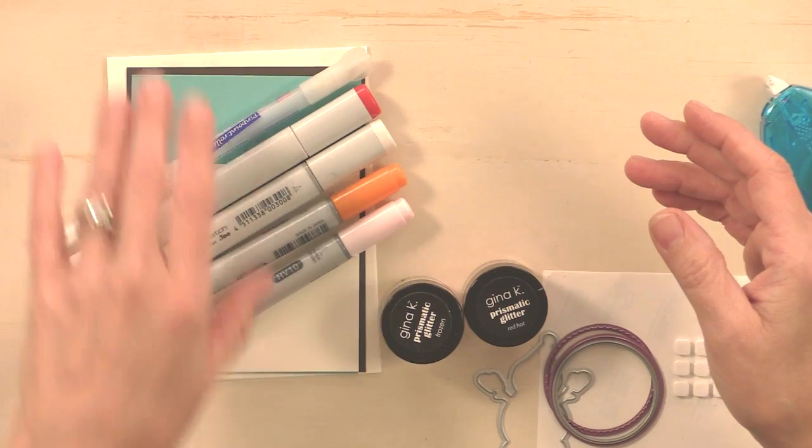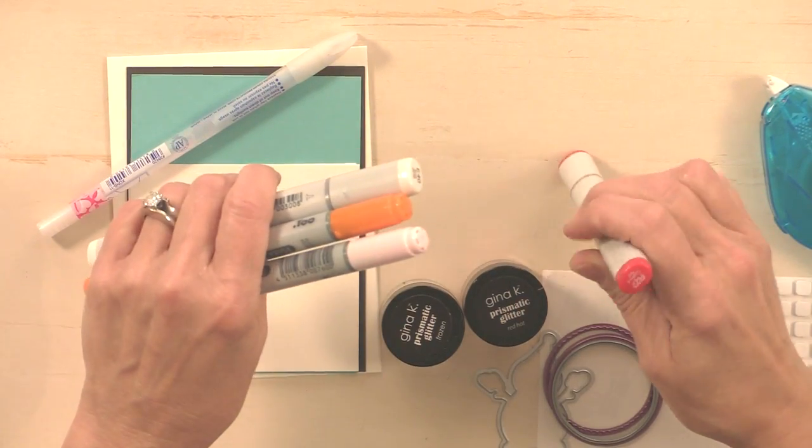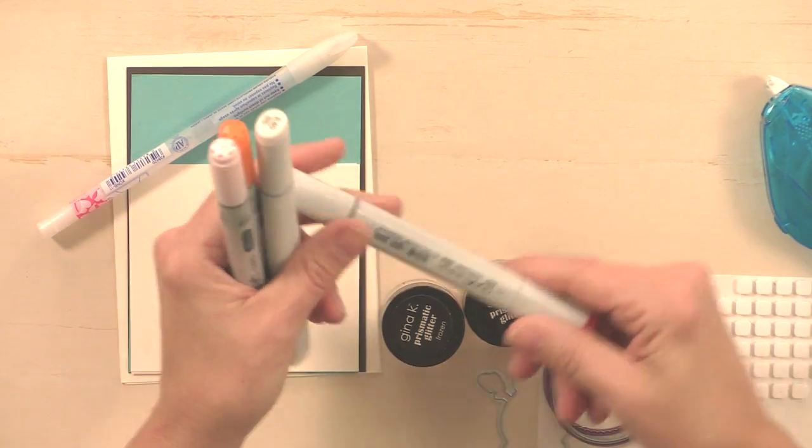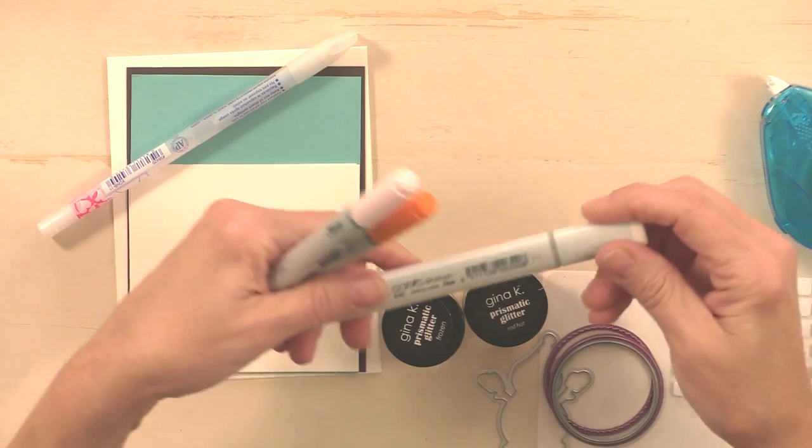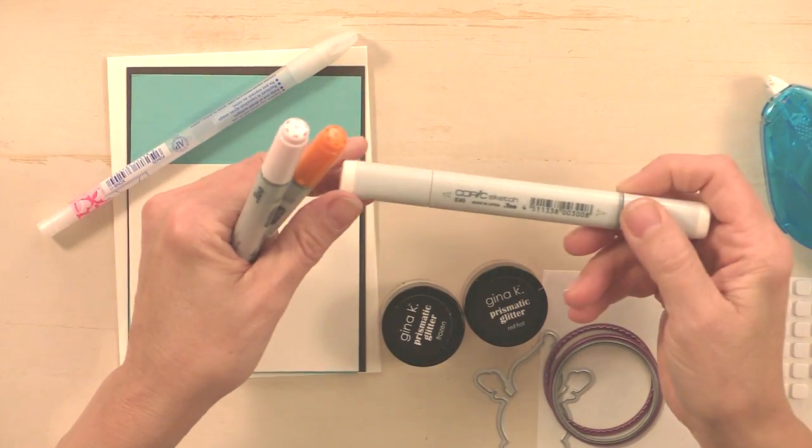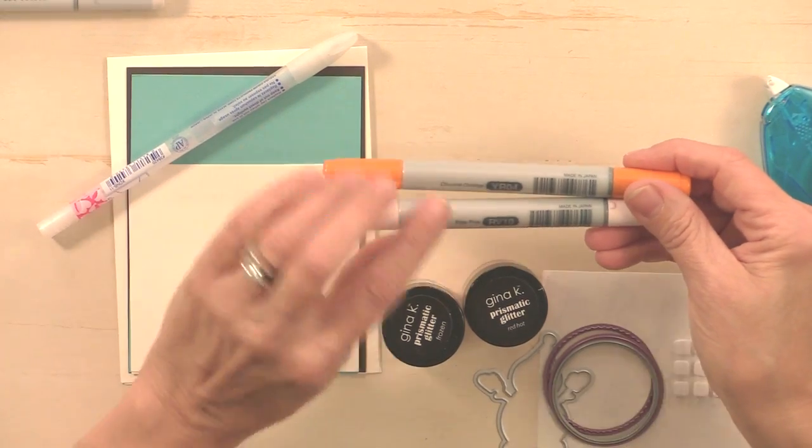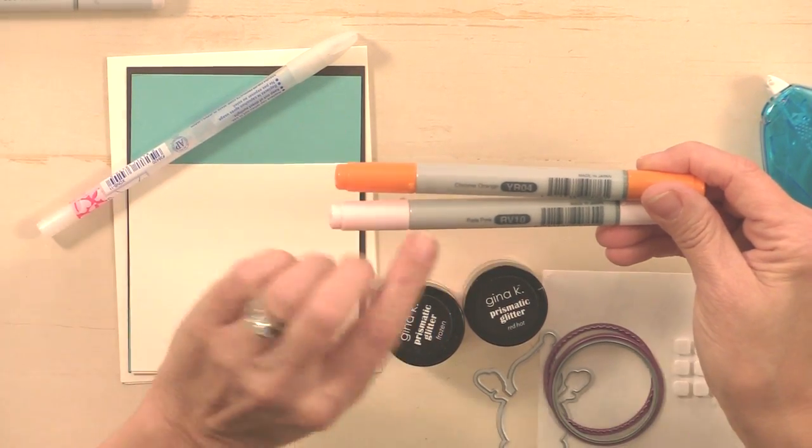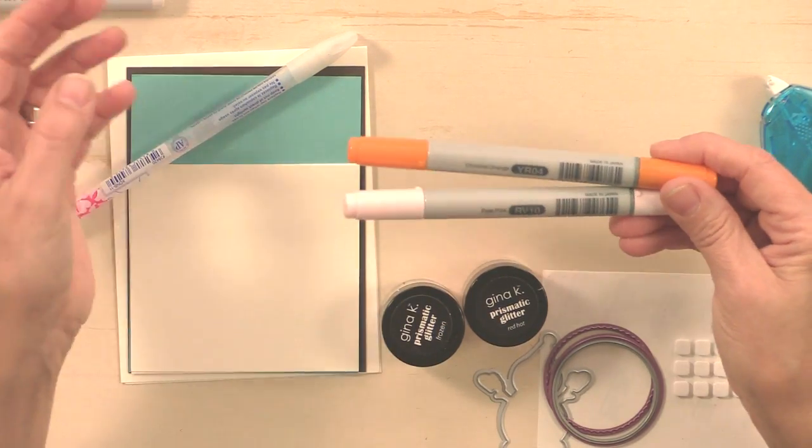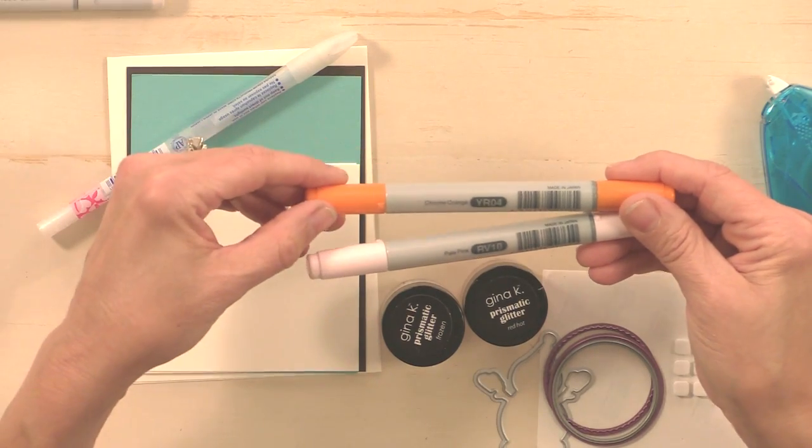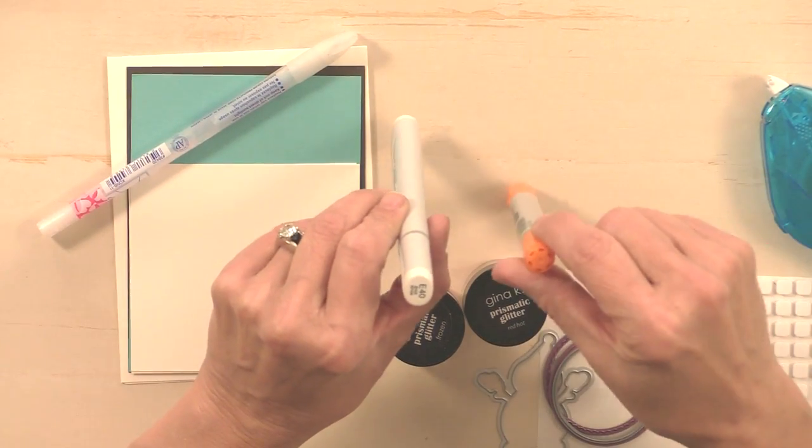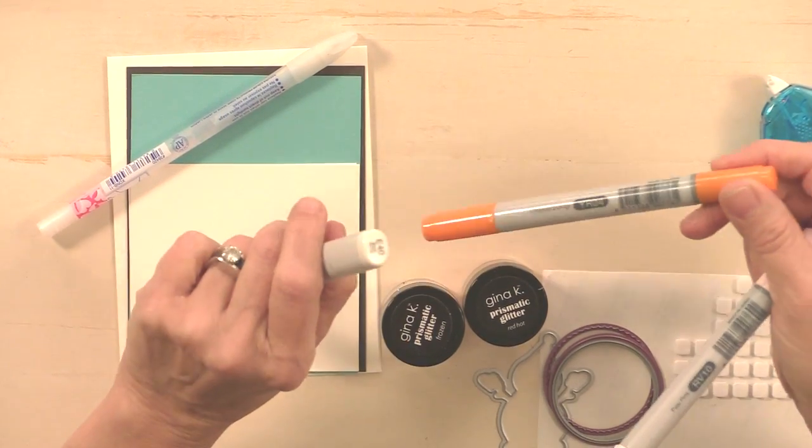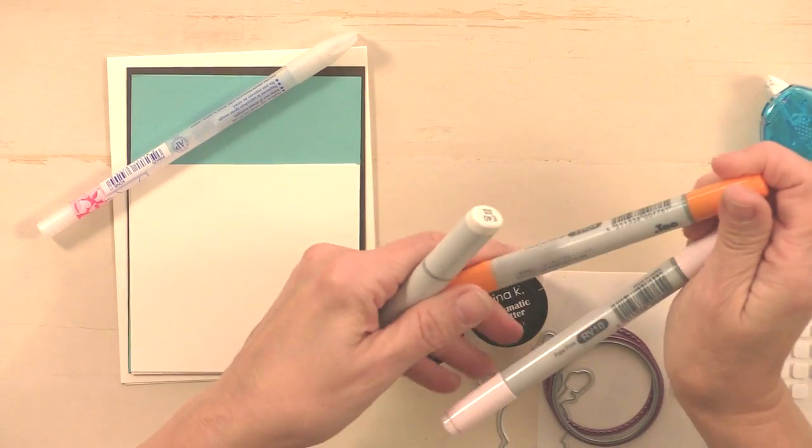Then I have some markers here. For markers, I'm going to use Copic R27, that's the Cadmium Red sketch pen. I have another sketch pen, E40 Brick White, and then I have a couple Chao markers: YR04 chrome orange and RV10 pale pink. The difference between these two markers is really about the barrel and the cap. The sketch are oval, the Chao are round. The sketch hold a little bit more ink than the Chao, and the Chao are less expensive. But they all work together, the tips are all the same, both are refillable, both can have tip replacement, so they're both great markers.